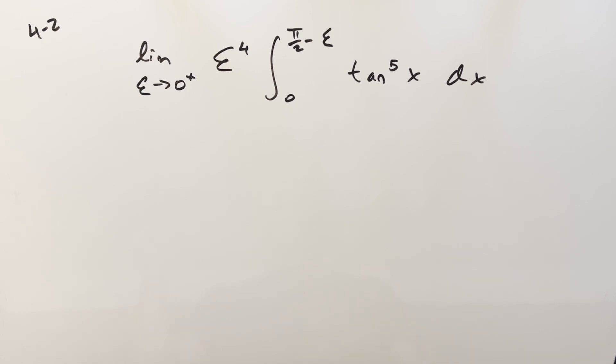Okay, we've got another interesting limit integral problem from MIT 2023. This was quarterfinals round four, number two. We have the limit as epsilon goes to zero plus e to the fourth integral from zero to pi over two minus epsilon tan to the fifth x dx.